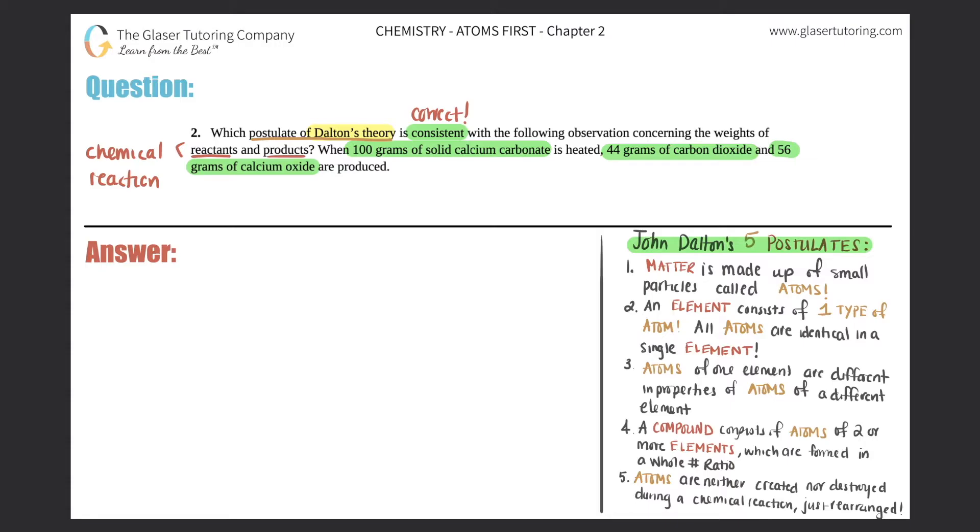And I know that reactants always go to products. So reactants are always your starting material and you will always produce your products. So reactants are always on the left-hand side and products are always on the right-hand side.